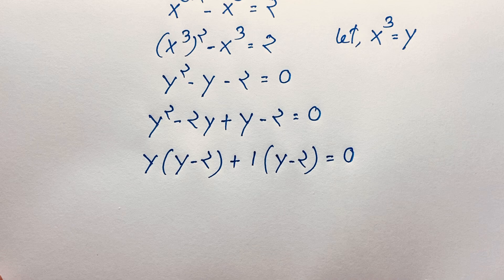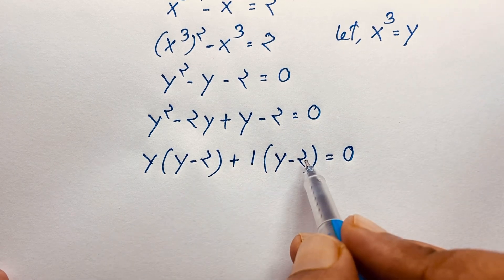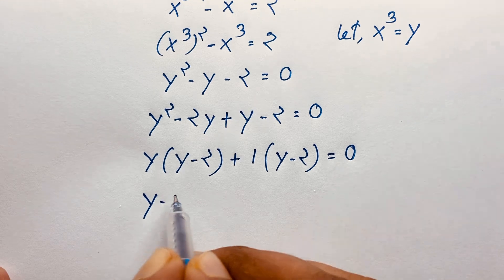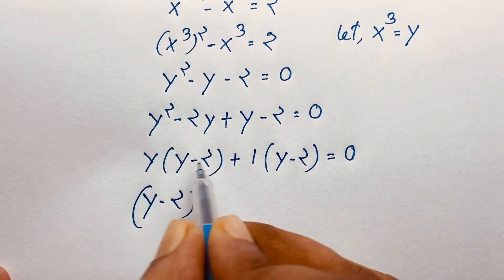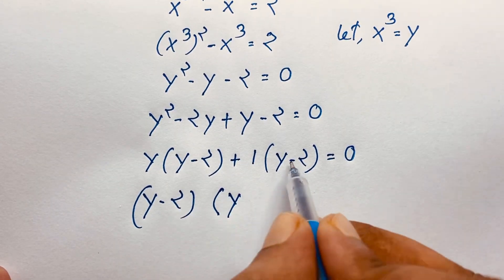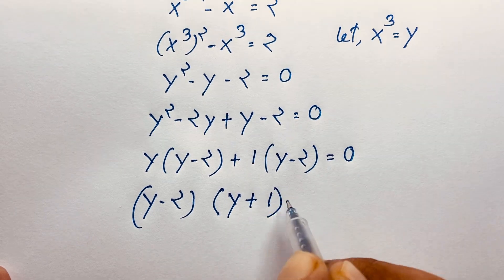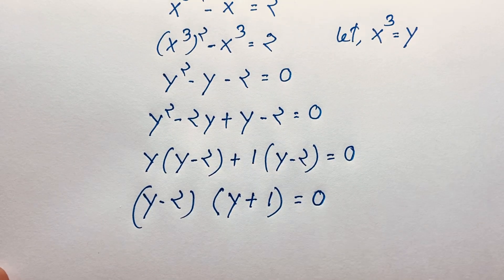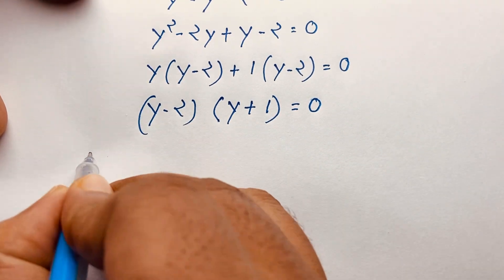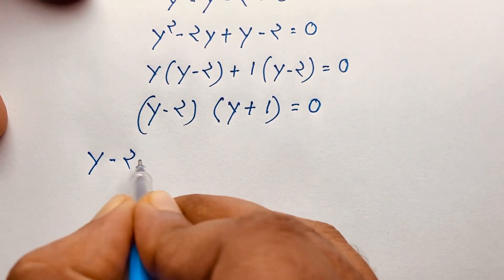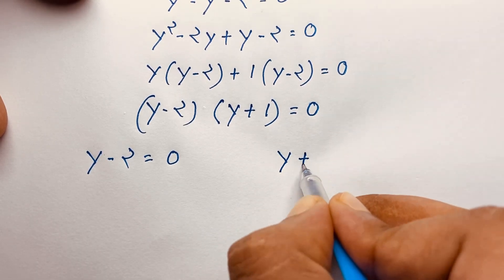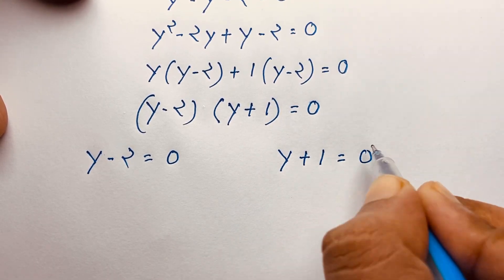Plus, 1 is common, so it will be y minus 2 is equal to 0. Then, you can see y minus 2 and y minus 2 are the same — so y minus 2 is common. Taking y minus 2 as common, this divided by this is y and this divided by this is plus 1, equal to 0. Now we will find out two cases: our first case is y minus 2 is equal to 0, and the other case is y plus 1 is equal to 0.